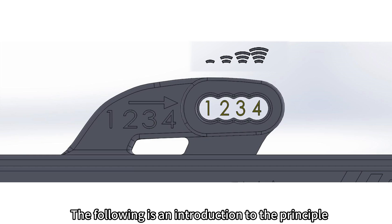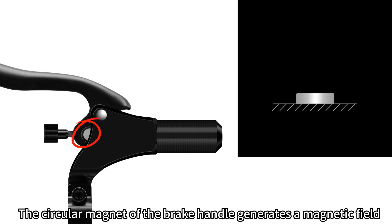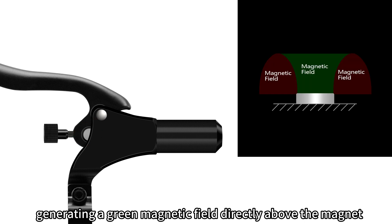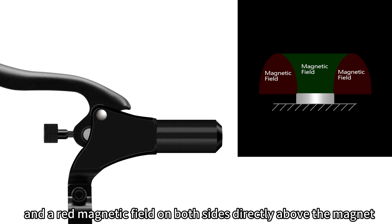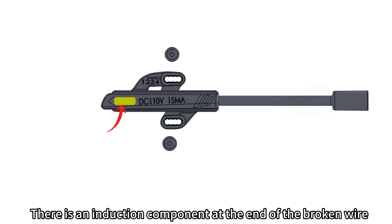The following is an introduction to the principle. The circular magnet of the brake handle generates a magnetic field, generating a green magnetic field directly above the magnet and a red magnetic field on both sides directly above the magnet. There is an induction component at the end of the broken wire.